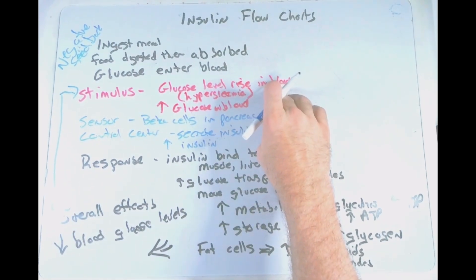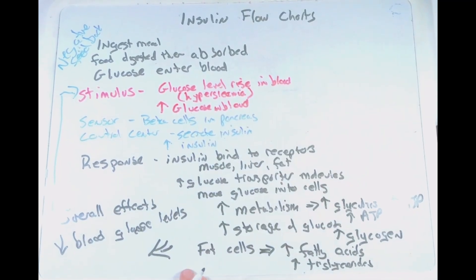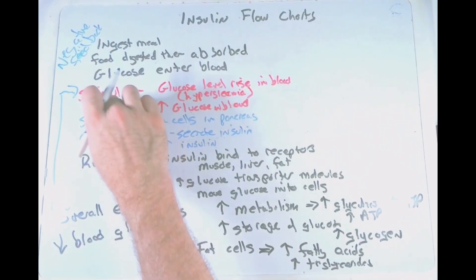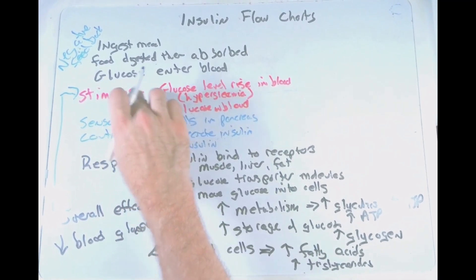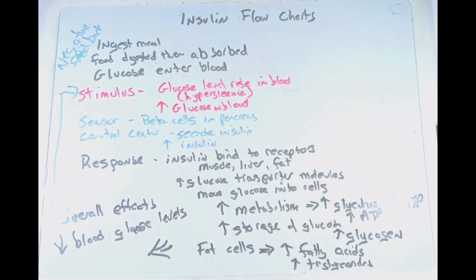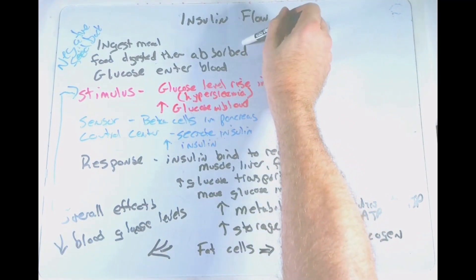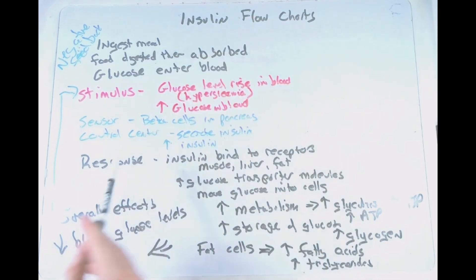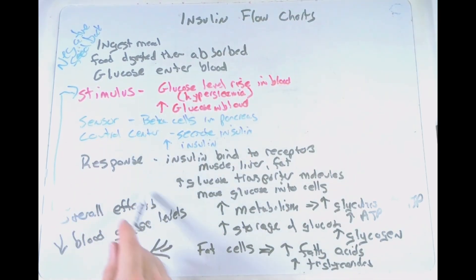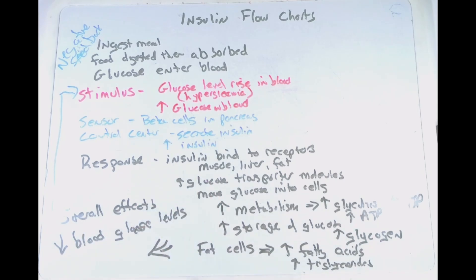Hopefully you get an idea about how we can use flowcharts to show the cause and effect series of steps — from the physiological process before the stimulus, identifying the stimulus, identifying the sensory control center, and looking at the response to see whether we're increasing or decreasing things along the way as we study these cause and effect processes.